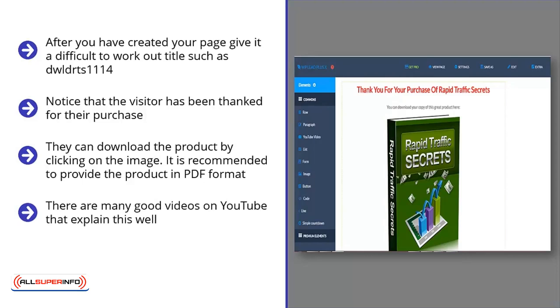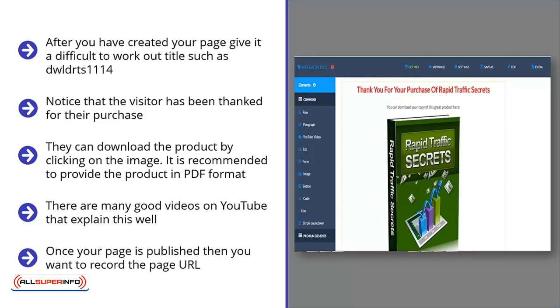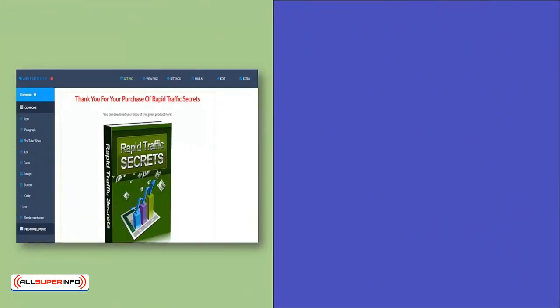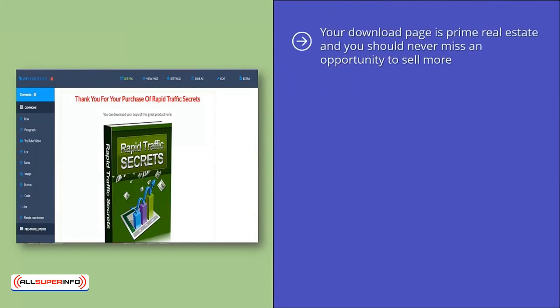You can now apply the link. Click on the image once to select it, then click on the link button and add the URL to your OTO PDF. Once your page is published, you want to record the page URL. This is very important, as you will need to add this into PayPal when you set up your payment button. After a successful payment has been made, PayPal will then automatically redirect the visitor to this page. Your download page is prime real estate, and you should never miss an opportunity to sell more, especially as the prospect has just made a purchase and could be hot for another one.